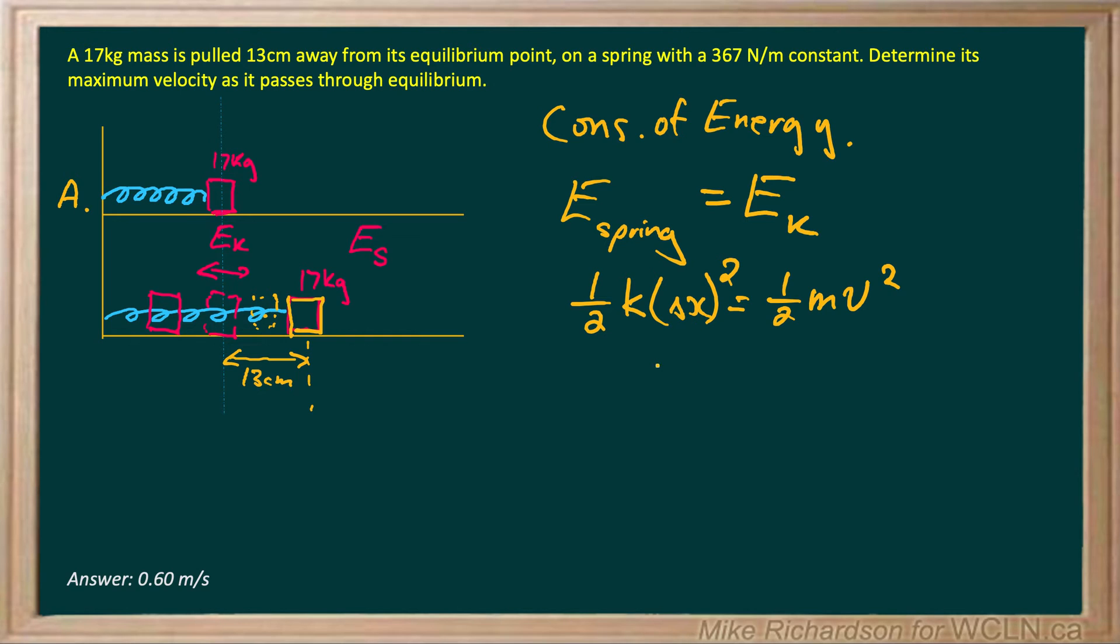So that's the same thing as one half k times the amplitude squared equals one half mv squared. We're trying to find the maximum velocity. Notice the halves cancel, and I end up getting kA squared over m equals v squared. So my maximum velocity will be the square root of kA squared all over m.